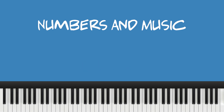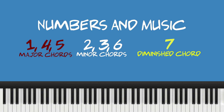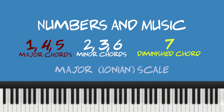If I know that the song is in a major key and I'm given the numbers one, four, and five, I'm always going to play a major chord. If the numbers given are two, three, or six, I'm always going to play a minor chord. If I'm given the number seven, I know that it's going to be a diminished chord. That's all seven chords in the major — Ionian in the Greek — scale.